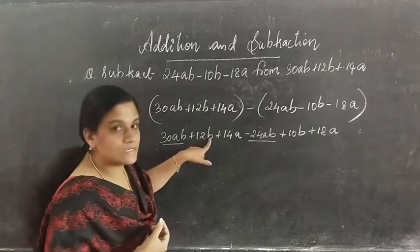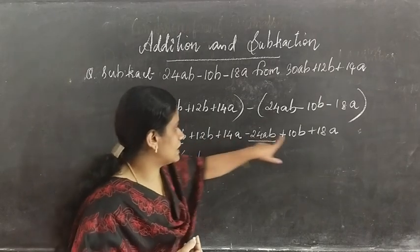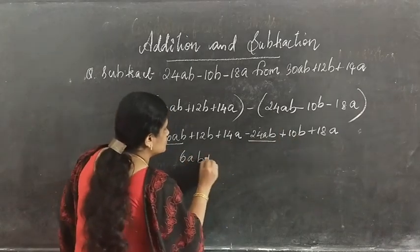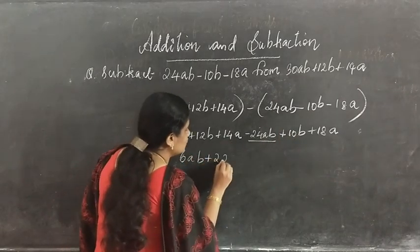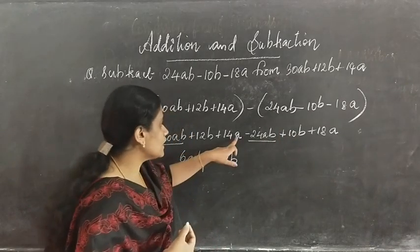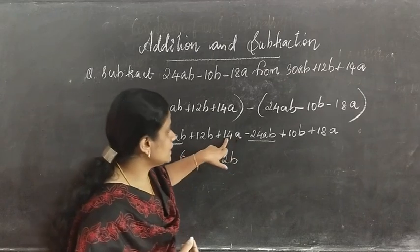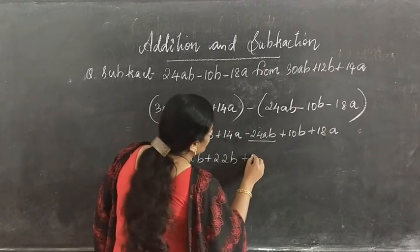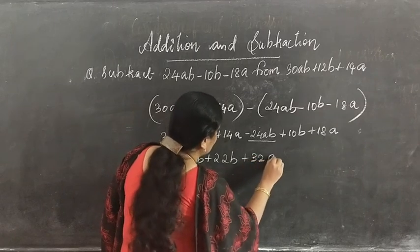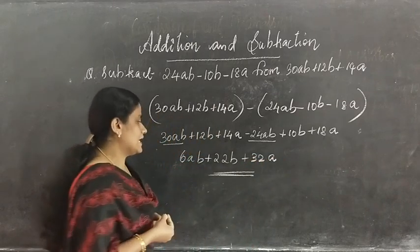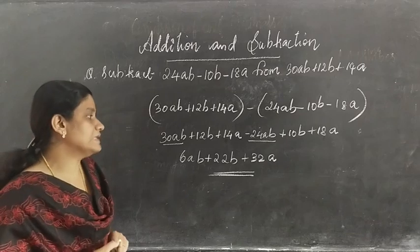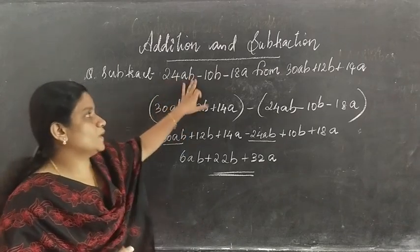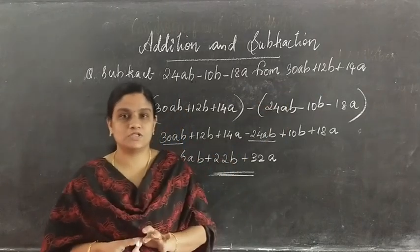Now we pair the like terms. ab terms: 30 minus 24 gives 6ab. Next, variable b: 12 plus 10 gives 22b. Next, variable a: 14 plus 18 gives 32a. So 6ab plus 22b plus 32a is the difference between these two expressions.